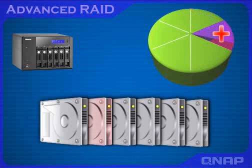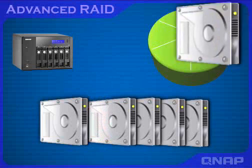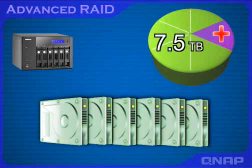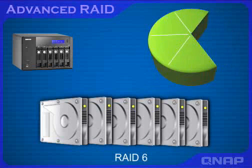RAID 5 allows 1 hard drive failure in the configuration. The NAS supports 1.5TB hard drives, which means you can have up to 7.5TB of storage capacity. RAID 6 allows a maximum of 2 hard drive failures.